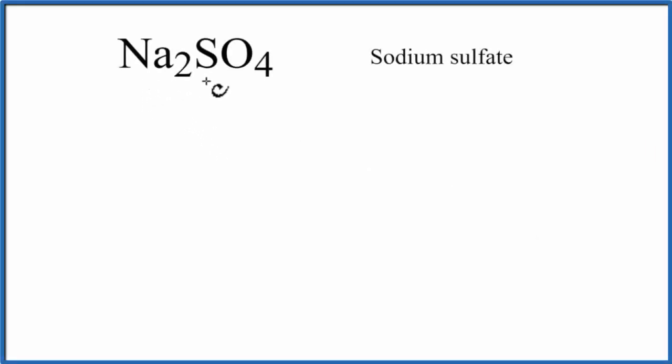To write the Lewis structure for Na2SO4, sodium sulfate, we need to recognize that sodium is a metal, and S and O are nonmetals.